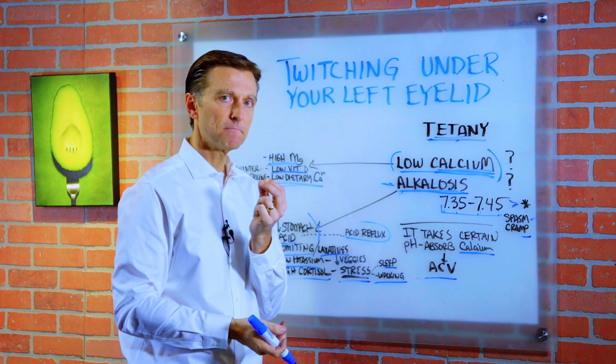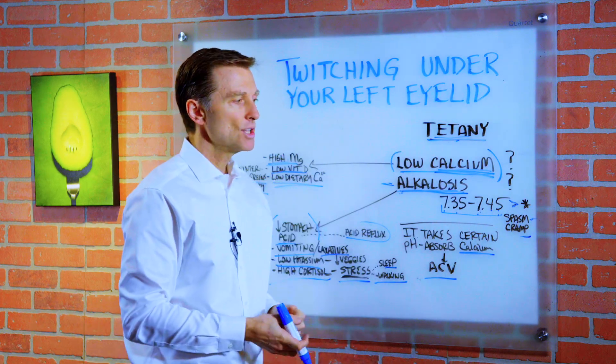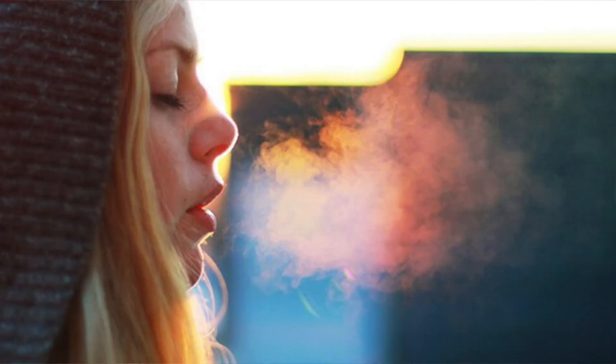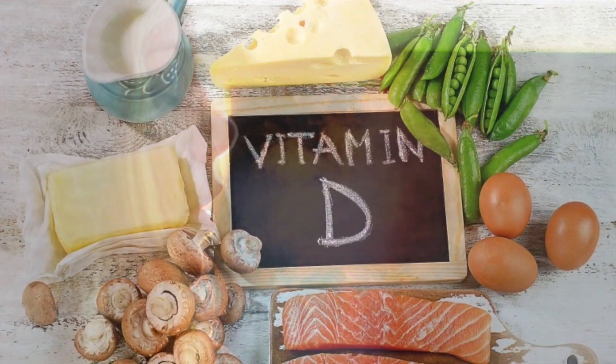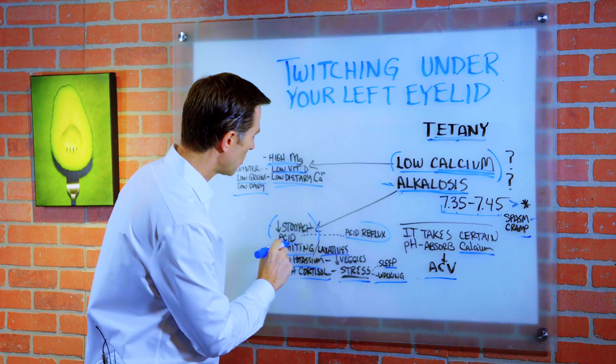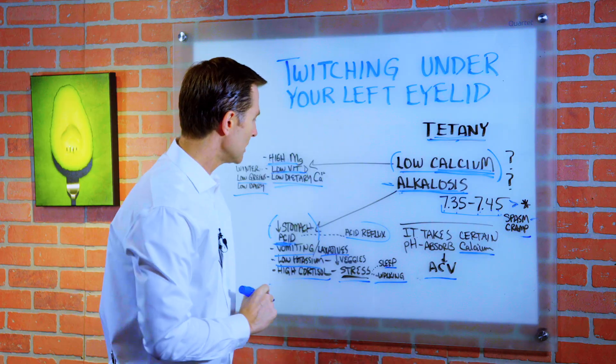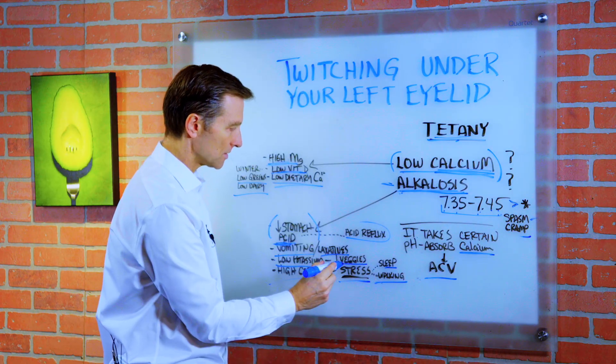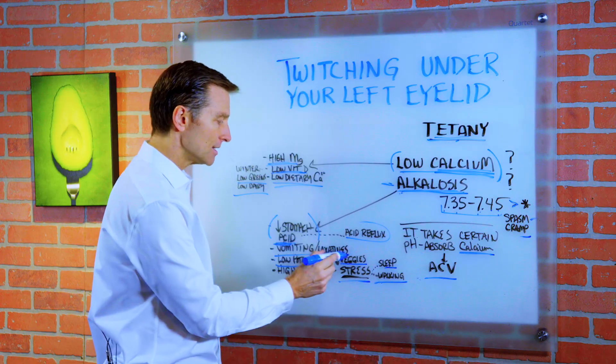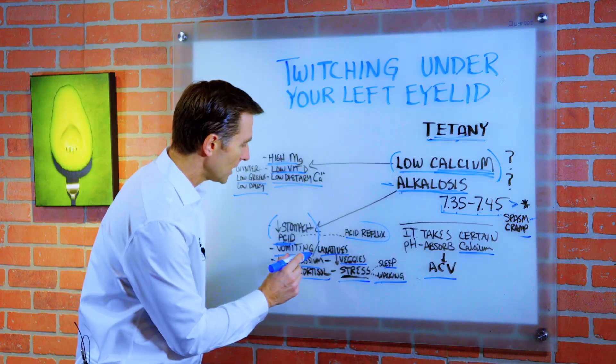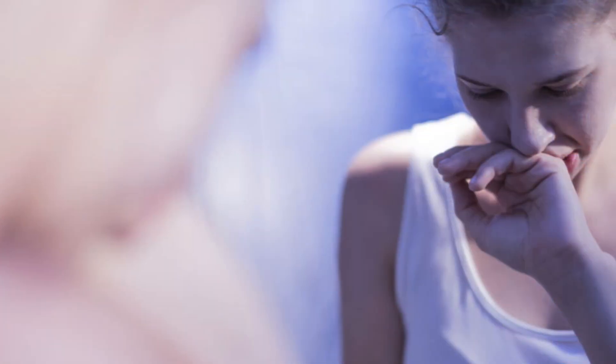So what you want to do if you get a symptom like this is kind of run through all the possibilities and see what's really behind it. Is it that it's wintertime and you just need vitamin D? That could solve it just like that. Is it more your stomach acid? Is it stress? Do you need to start eating more vegetables? Are you taking a laxative? Maybe you should fix the reason why you have constipation. Or let's say you're bulimic and you're vomiting. Now you understand why you have this condition.